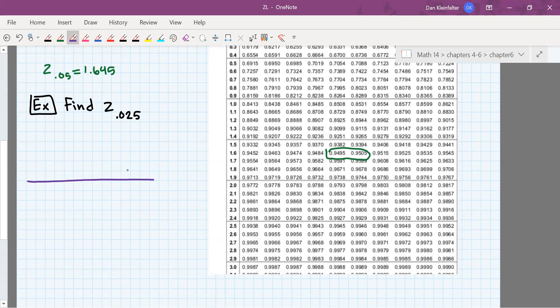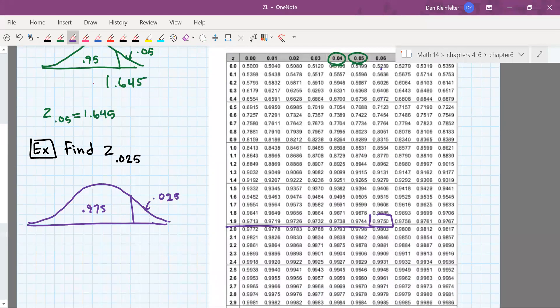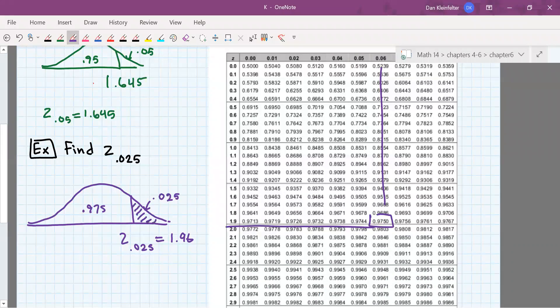If we want an area of 0.025 to the right, then 0.975 is to the left. If 0.975 is to the left, then that's 1.96. So z.025 is 1.96. That's a z-value that would cut off an area of 0.025 to its right.